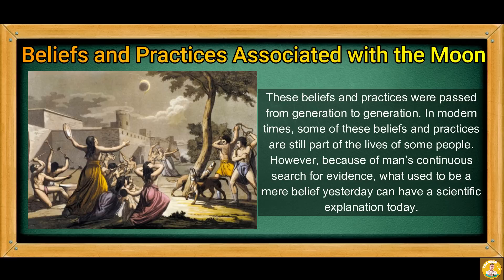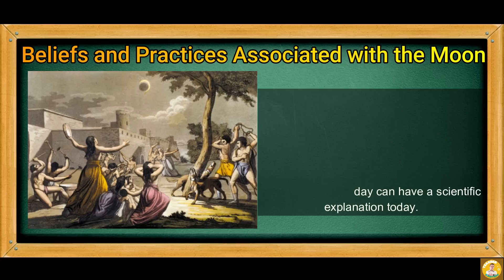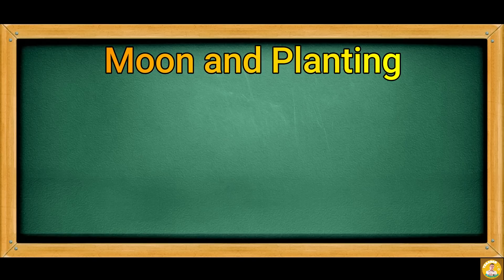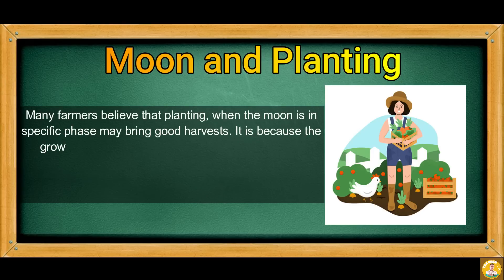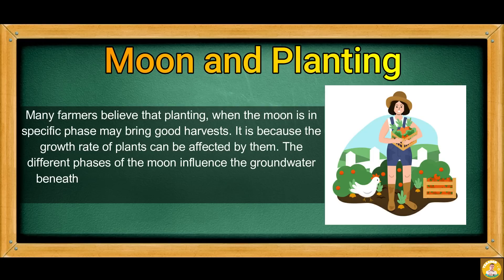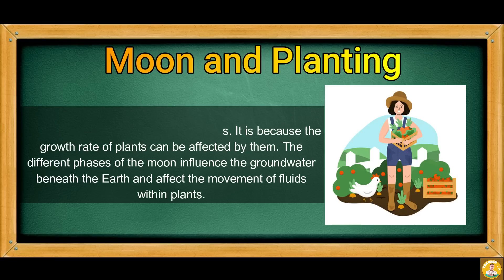However, because of man's continuous search for evidence, what used to be a mere belief yesterday can have a scientific explanation today. Moon and planting: many farmers believe that planting when the moon is in a specific phase may bring good harvests. The different phases of the moon influence the groundwater beneath the earth and affect the movement of fluids within plants.